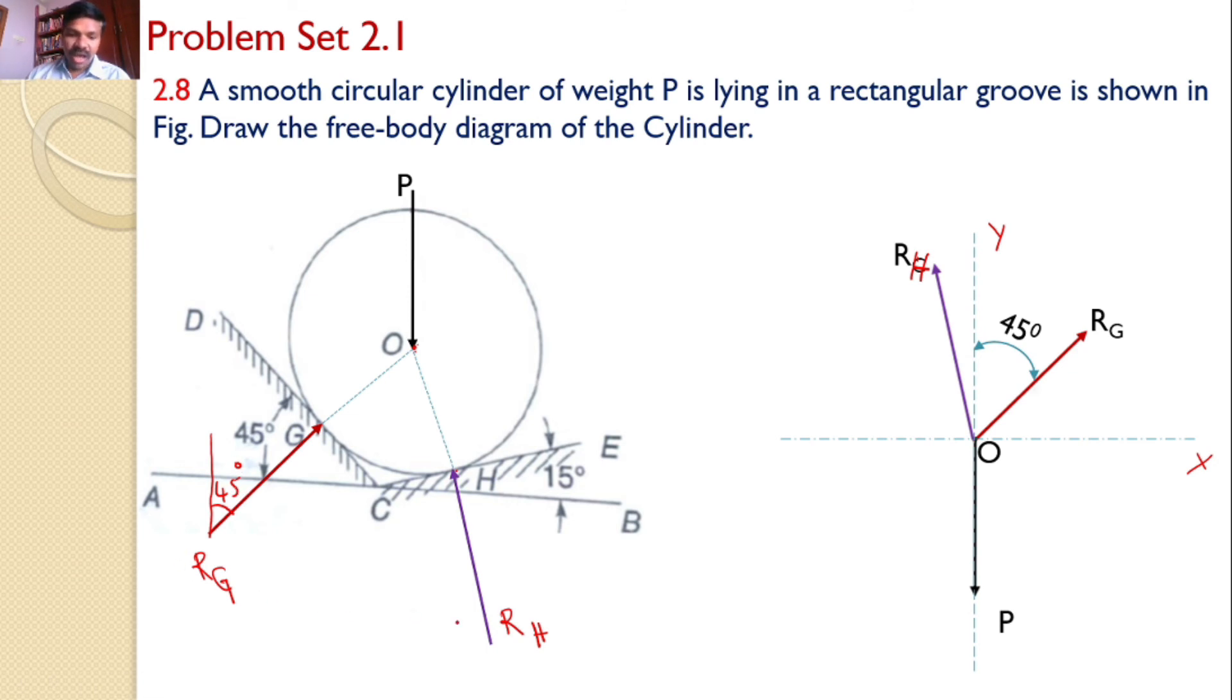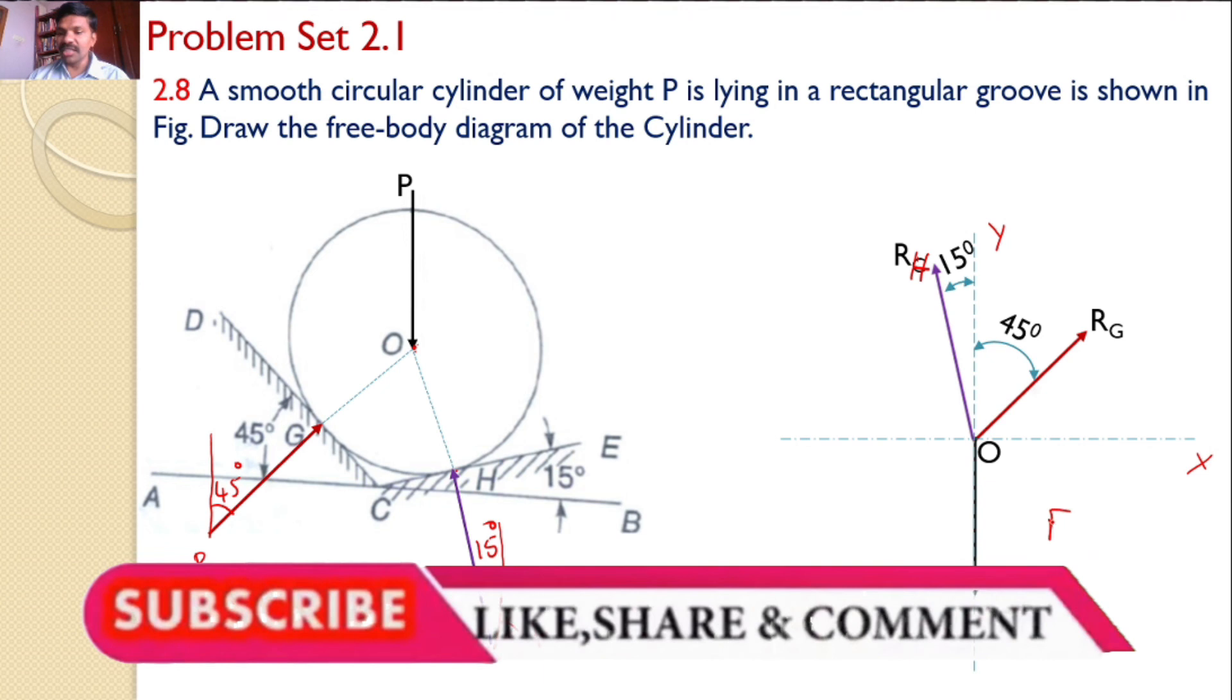Similarly, CE makes an angle 15 degrees with the horizontal. R_H makes the same 15 degrees angle with the vertical. This is the free body diagram of the cylinder.